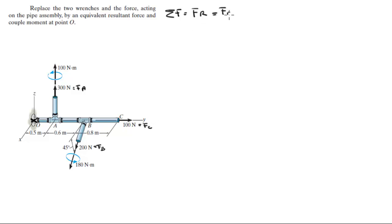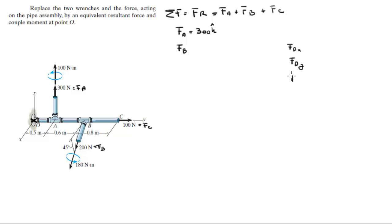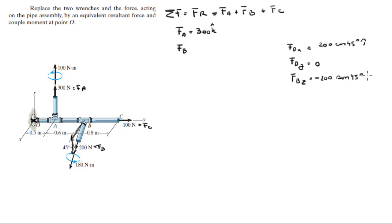F_R equals F_A plus F_B plus F_C. F_A is 300 in the positive k direction. F_B has an x-component, a y-component, and a z-component. The y-component is 0 since it sits on the XZ plane. F_B_x equals 200 times cosine 45° (projection in the positive x direction), and the z-component is 200 sine 45° but negative because it goes in the negative k direction.